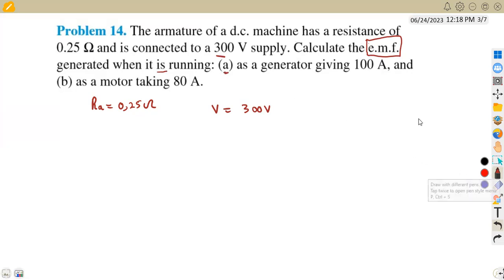The first part that we are given is a condition when it is a generator. So when it is running as a generator, it is giving 100 amps, which is the current that we have in this case for the armature current at that moment of 100 amps.